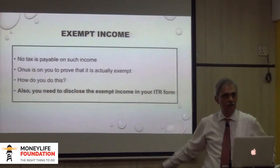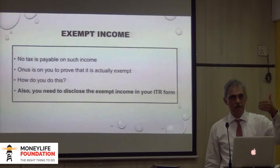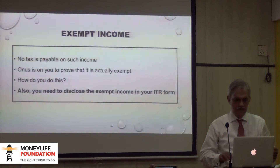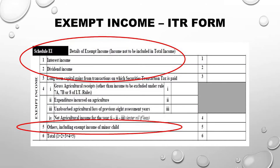We have to show this exempt income in our ITR form — in our income tax return. I will show you a snapshot of an actual ITR form. Schedule EI: details of exempt income — income not to be included in total income. The first item is interest, the second item is dividend. The ITR form clearly has a field for disclosing not only your taxable income but your exempt income also.